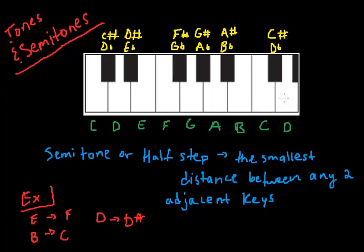Between here and here, or here and here, or here and here. So it's just adjacent keys - those are semitones.